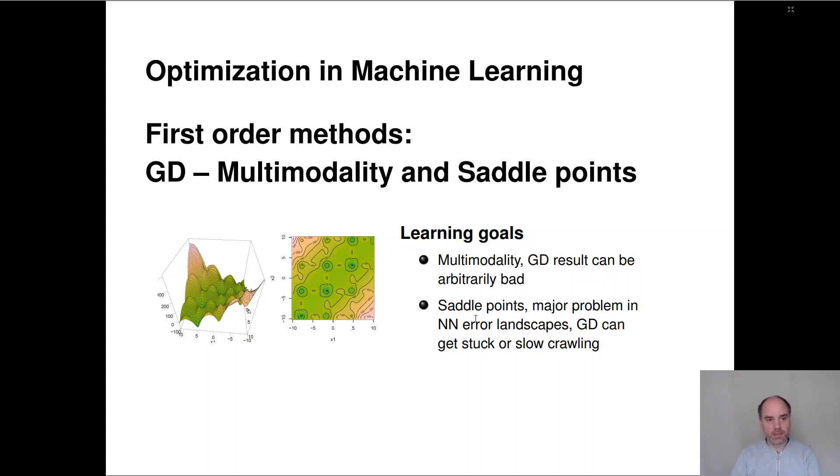Hi and welcome to the next section in our chapter on first-order optimization methods. Here we'll talk about problems that occur with respect to gradient descent if we encounter very multimodal problems, especially if we encounter saddle points.